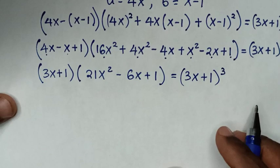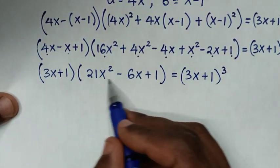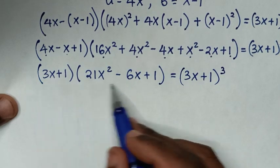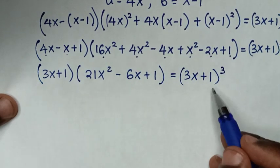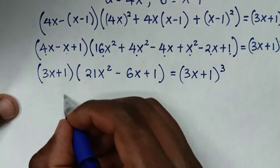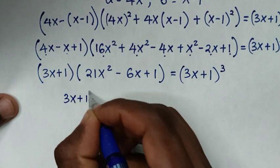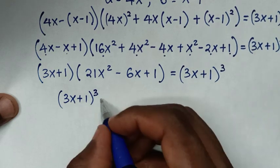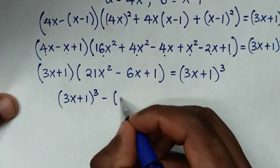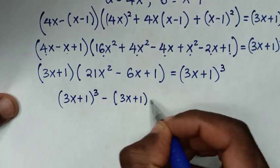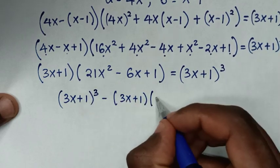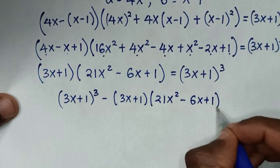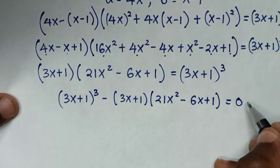In the next step, we bring (3x+1)³ to the left side. So it becomes (3x+1)³ minus (3x+1)(21x² minus 6x plus 1) equals 0.